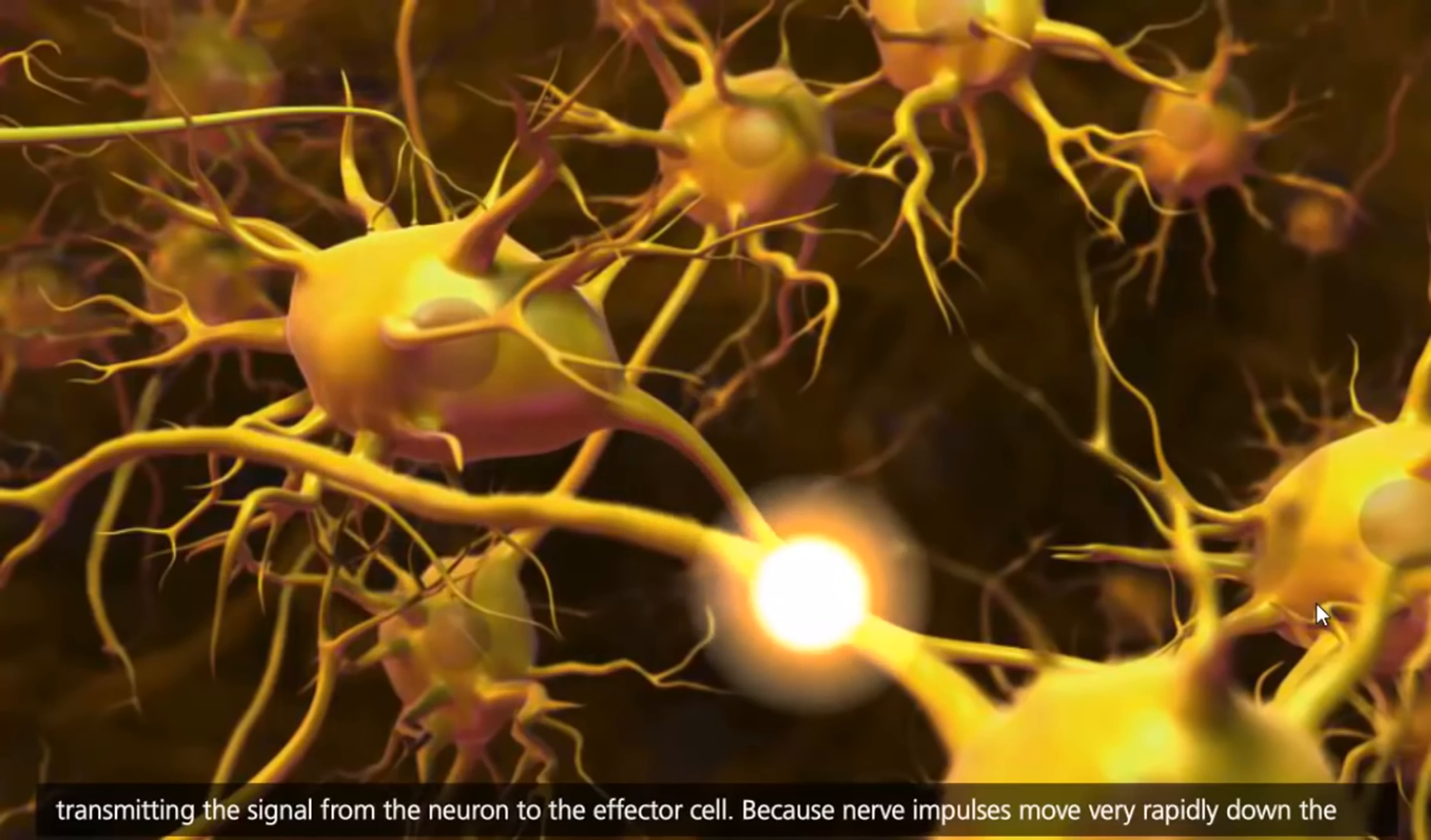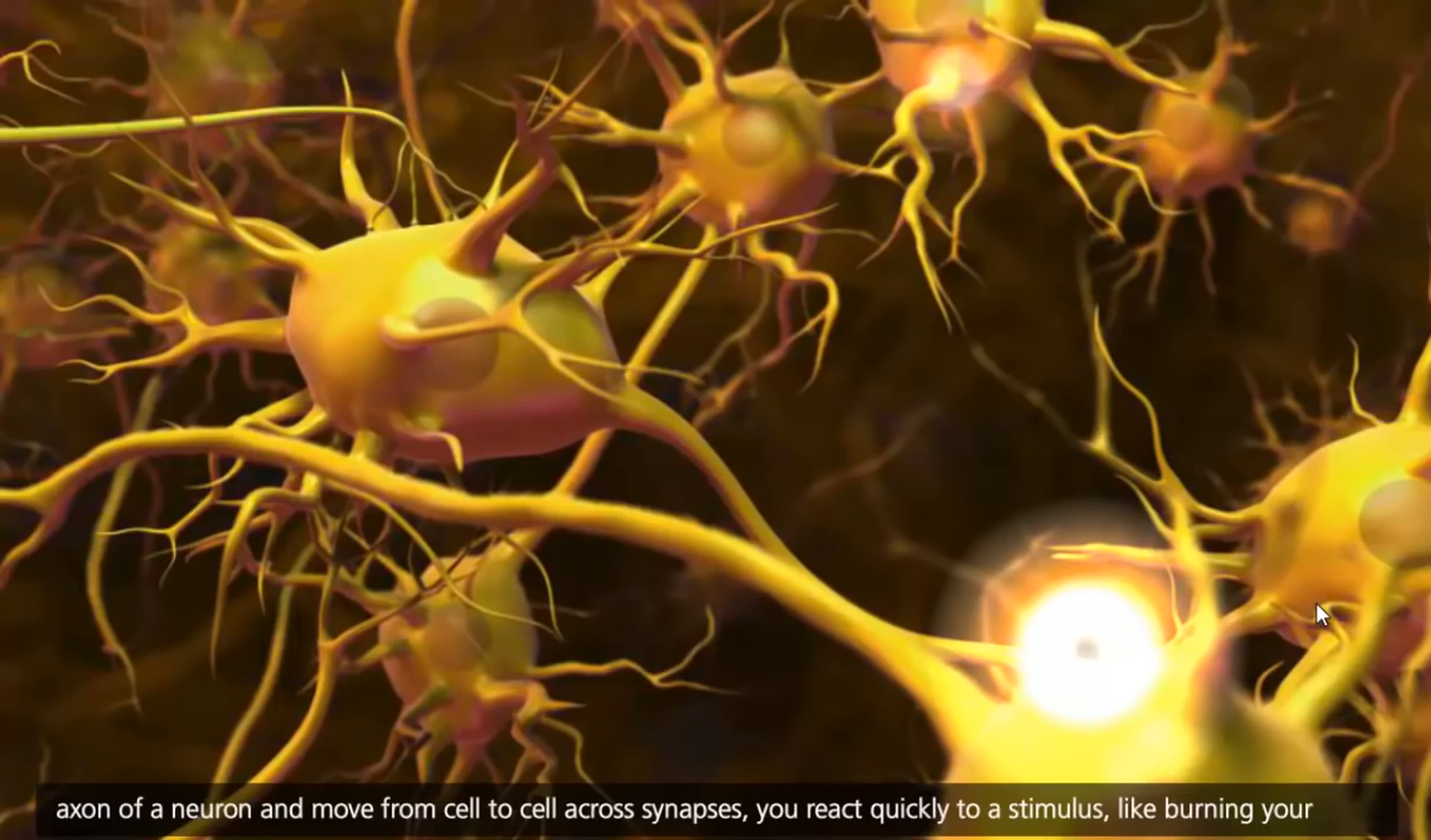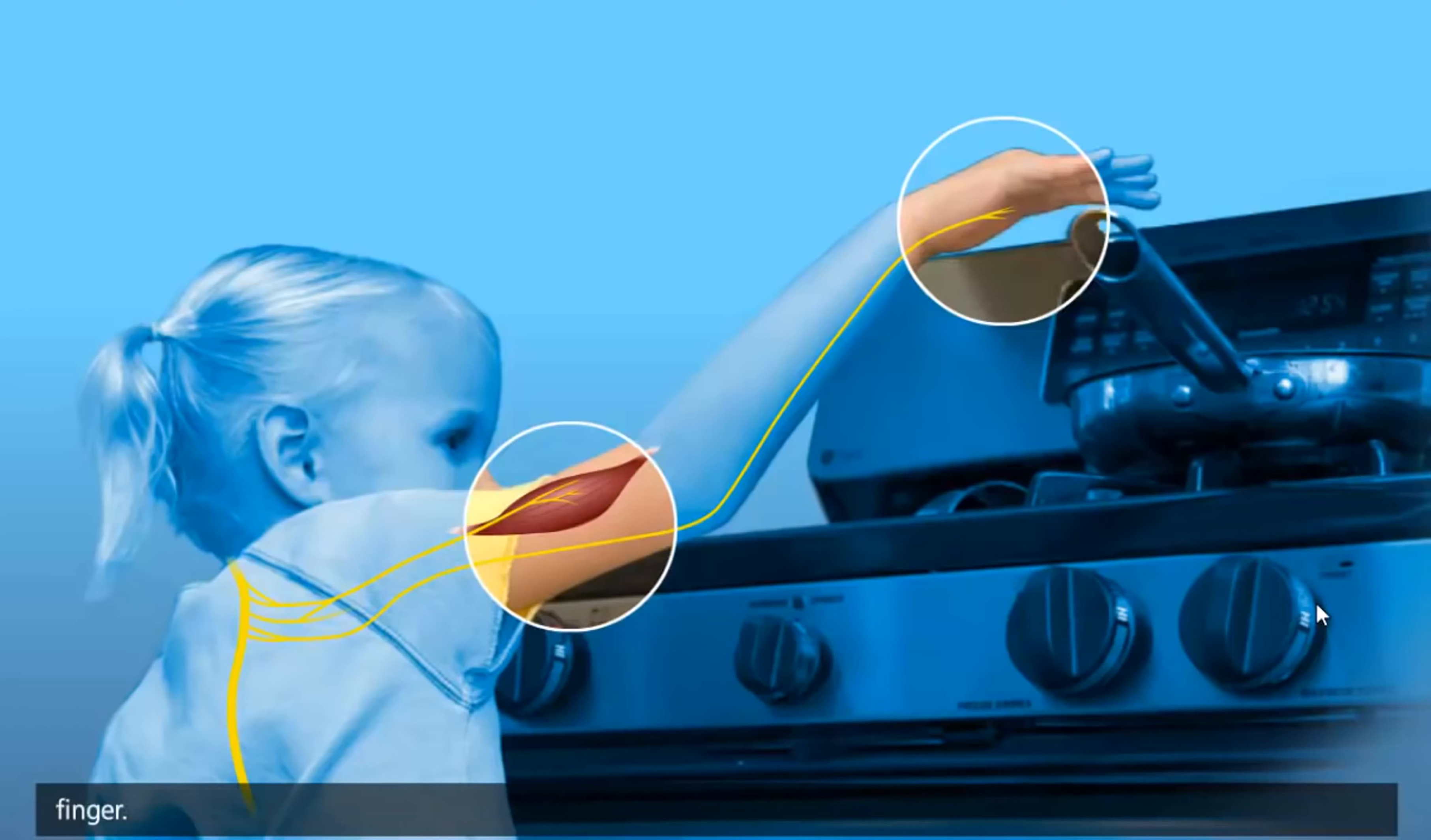Because nerve impulses move very rapidly down the axon of a neuron and move from cell to cell across synapses, you react quickly to a stimulus, like burning your finger.